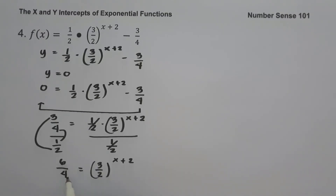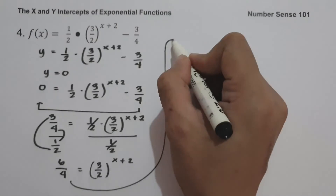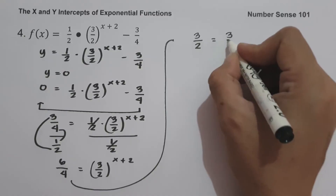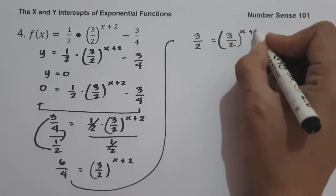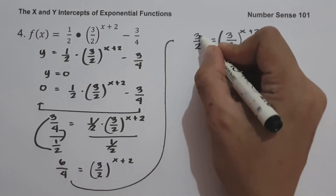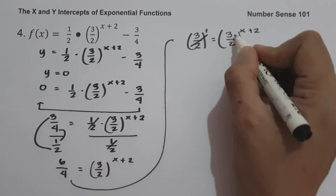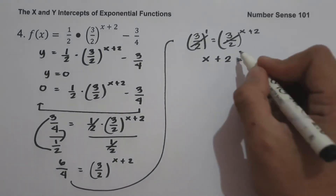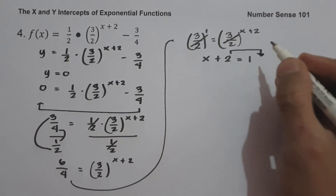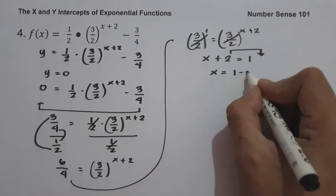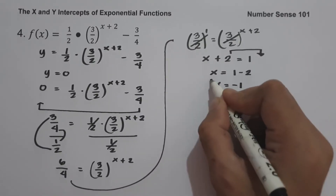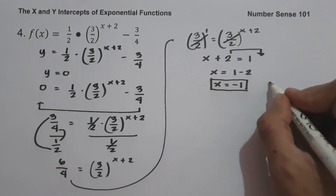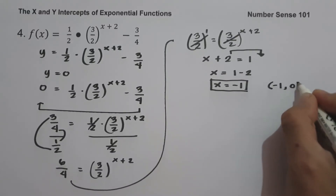Dividing through, since 6 and 4 are divisible by 2, we can simplify to get 3 over 2 raised to x plus 2. Since the exponent of 3 over 2 is 1, we cancel the base and get x plus 2 equals 1. Moving 2 to the side of 1 gives x equals 1 minus 2, which is negative 1. Since x is negative 1 and y is 0, our x-intercept is (-1, 0).